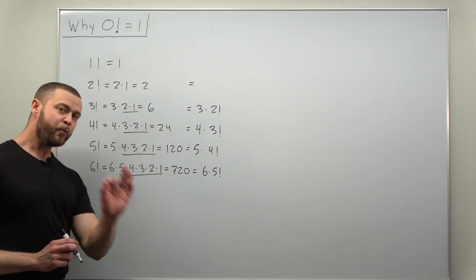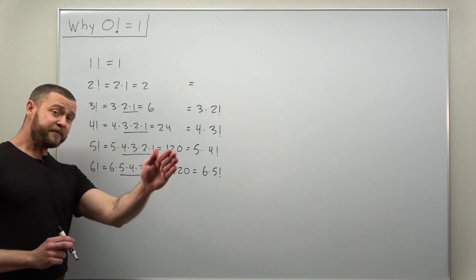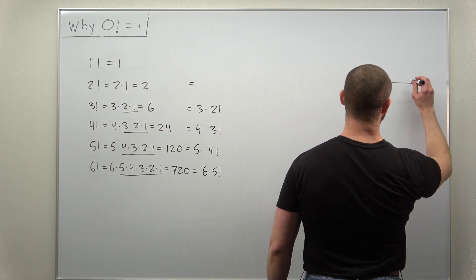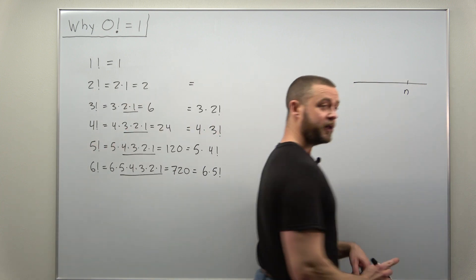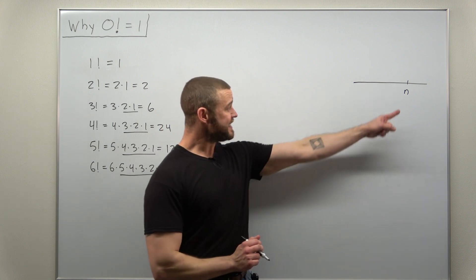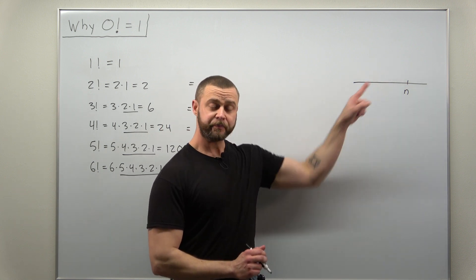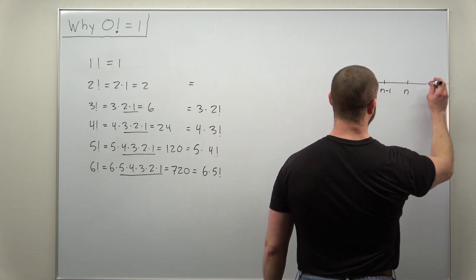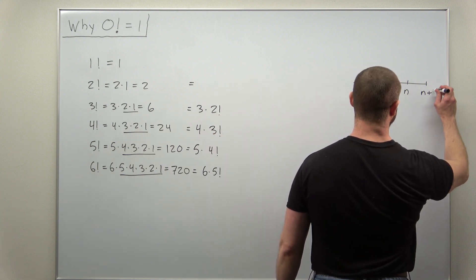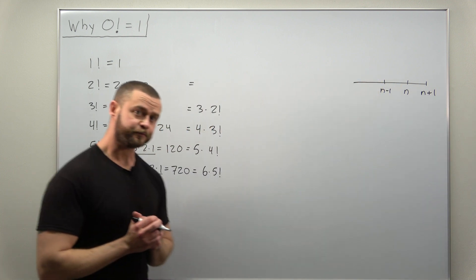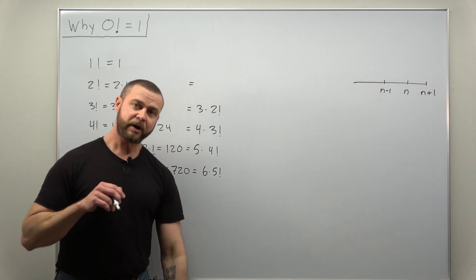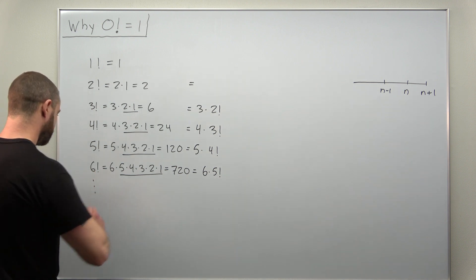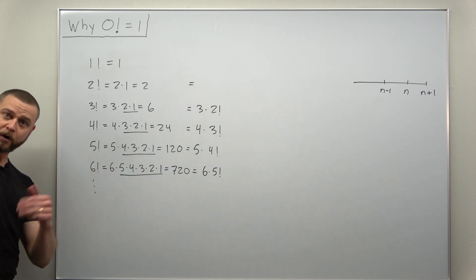Now the way we think of a previous factorial - let's just think on a number line. If we have some arbitrary integer, what comes before it is one less. What comes after it is one more. So it looks like we can generalize this, and the pattern will continue to hold.